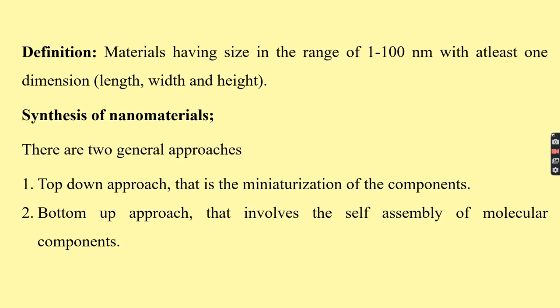What are nanomaterials? Nanomaterials are small-sized materials. Consider a material with at least one external dimension less than 100 nanometers — in other words, materials having a size in the range of 1 to 100 nanometers in at least one dimension, whether length, width, or height. If at least one dimension meets this criterion, the material is classified as a nanomaterial.